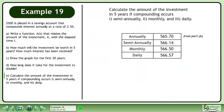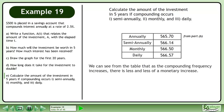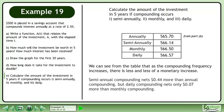Summarize the results in a table. We can see from the table that as the compounding frequency increases, there is less and less of a monetary increase. Semi-annual compounding nets $0.41 more than annual compounding, but daily compounding nets only $0.07 more than monthly compounding.